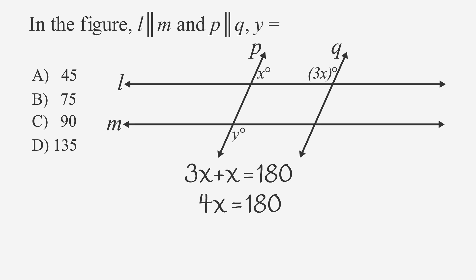Solve for X by dividing both sides by 4, we get that X equals 45. This means that we can mark angle X as 45 degrees, as well as its three corresponding angles.